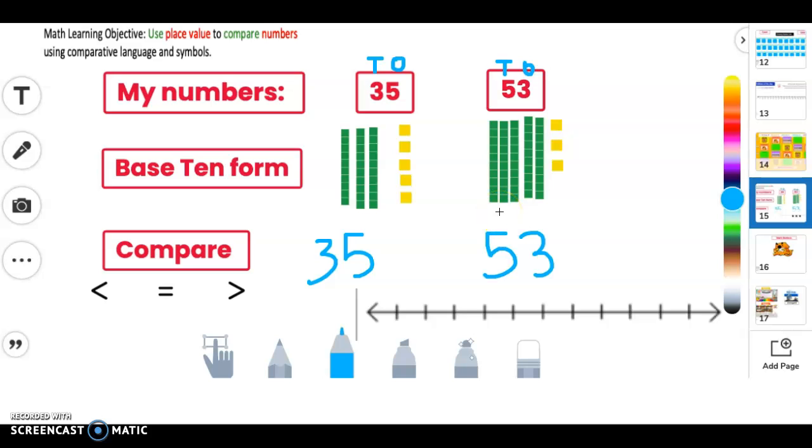I can see now what do I do here. First I'm going to look at the tens place because it is the greater digit. So because this five here is greater than this three on this side in the tens place, I know that 53 is greater than 35.